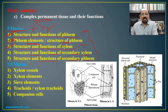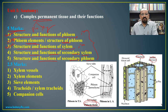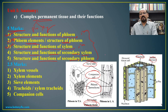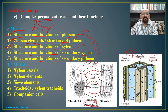Phloem consists of sieve tubes, companion cells, phloem parenchyma, and phloem fibers. Xylem is made up of vessels, tracheids, wood fibers, and xylem parenchyma. You must draw the diagram for phloem and for xylem, as marks are allocated for both written matter and diagrams — if you don't draw the diagram, those marks are not awarded.